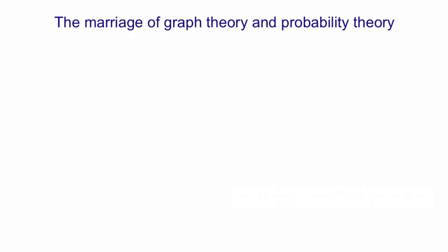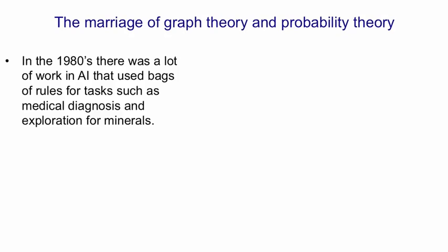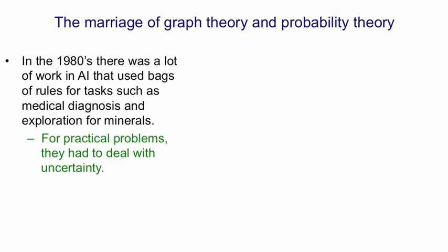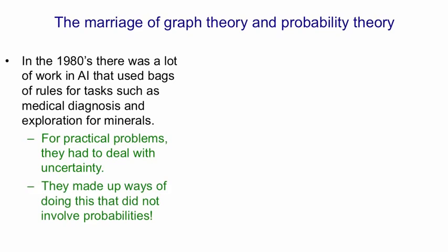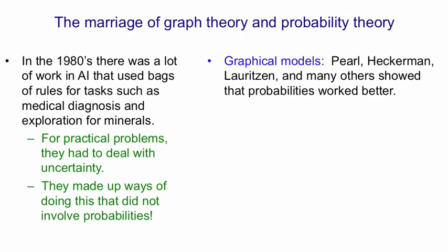Probabilities eventually found their way into AI via something called graphical models, which are a marriage of graph theory and probability theory. In the 1980s, there was a lot of work on expert systems in AI that used bags of rules for tasks such as medical diagnosis or exploring for minerals. These were practical problems, so they had to deal with uncertainty. People in AI disliked probability so much that even when dealing with uncertainty, they made up their own ways of dealing with it that did not involve probabilities. Graphical models were introduced by Pearl, Heckerman, Loritzan and many others, who showed that probabilities actually worked better than the ad hoc methods developed by people doing expert systems.